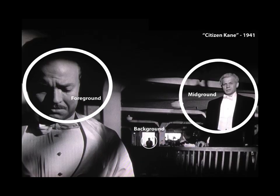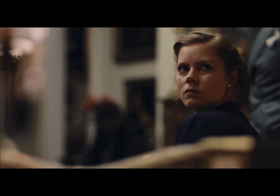Filmmakers like Orson Welles and Alfred Hitchcock were famous for featuring a lot of deep focus photography in their movies, though deep focus is sometimes very difficult to achieve. In this image from Citizen Kane, the foreground, mid-ground, and background are all sharply in focus, creating a very interesting visual experience where the viewer chooses which part of the frame to focus on. In a lot of contemporary films, the director or cinematographer draws your attention to exactly what they want you to look at by throwing unimportant things out of focus.